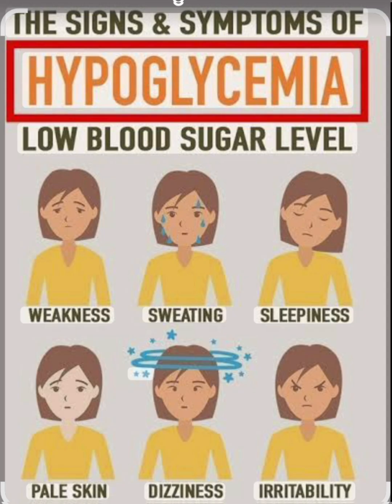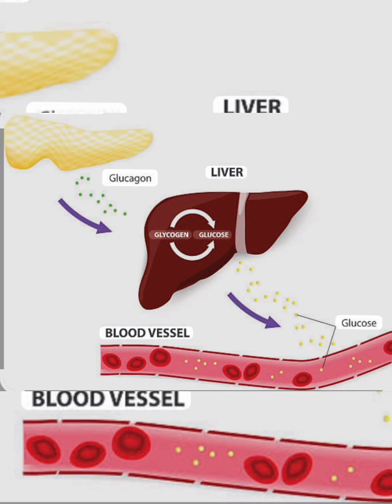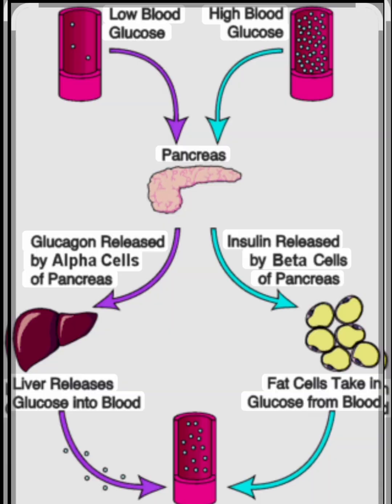When there is less glucose in your body, probably during fasting, you feel lethargic because of low glucose. At that time, the pancreas releases the glucagon hormone, which acts on the liver to break down the stored glycogen back into glucose.